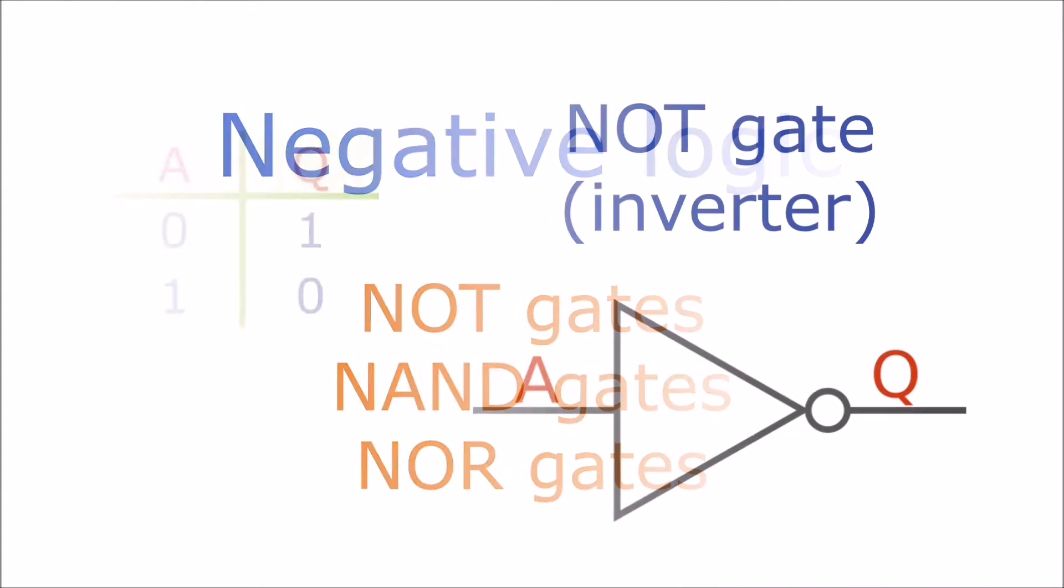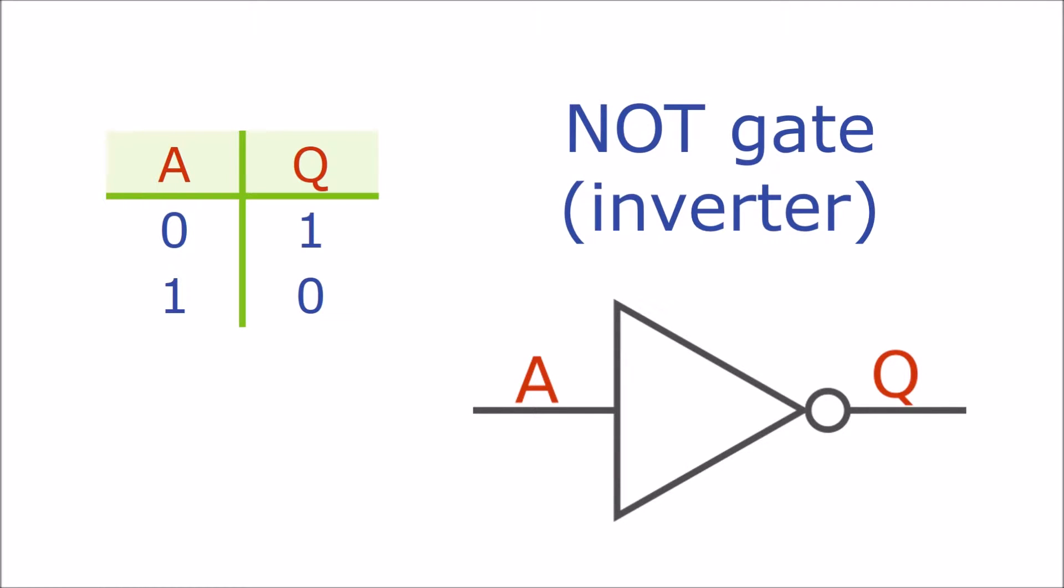A NOT gate is a very simple gate with one input and one output. The output is always the opposite of the input. As you can see from the truth table, when A is zero the output Q is one. When A is one the output is zero. A NOT gate is sometimes called an inverter because it inverts the output. Zero becomes one, one becomes zero.